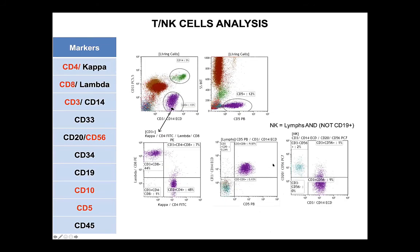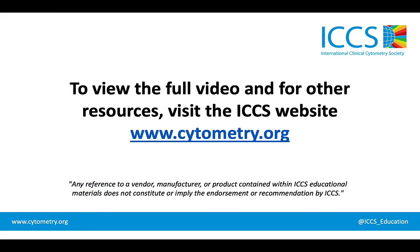For the T cells, they are enumerated using CD3 and CD5 to make sure there is no aberrant T cell population negative for either of those two markers. The T cells are classified into CD4-positive T helper and CD8-positive T suppressors. We also investigate the intensity of CD5 and CD3 on the T cells. As for the NK cells, they are enumerated from a dot plot of CD3 versus CD56 out of a Boolean-gated lymphocyte and not CD19 population.